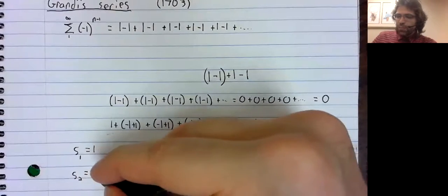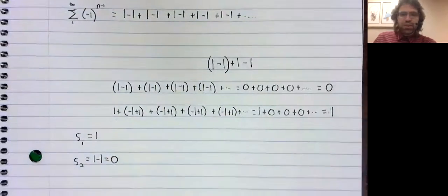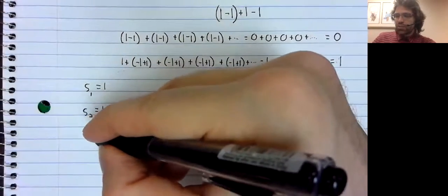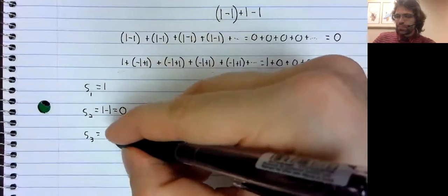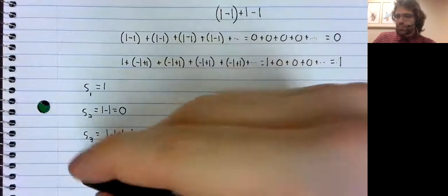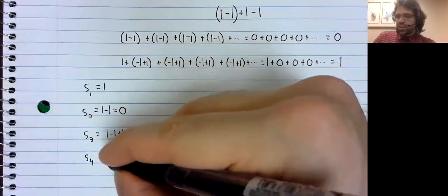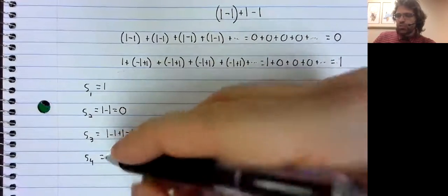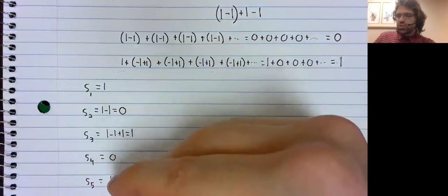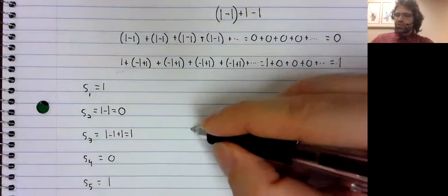I will simply give these partial sums. What we find is that these partial sums alternate between one and zero.